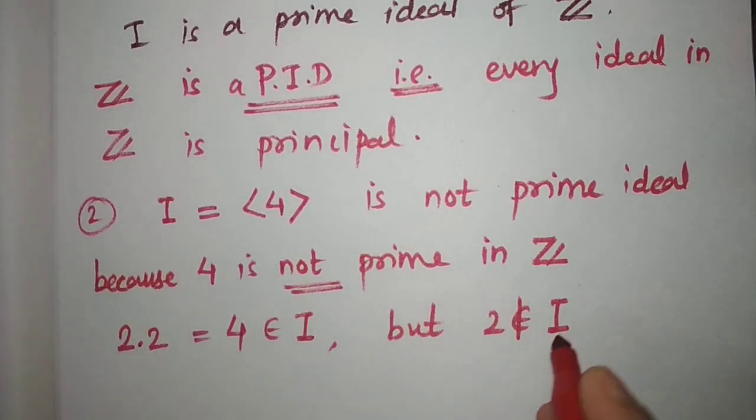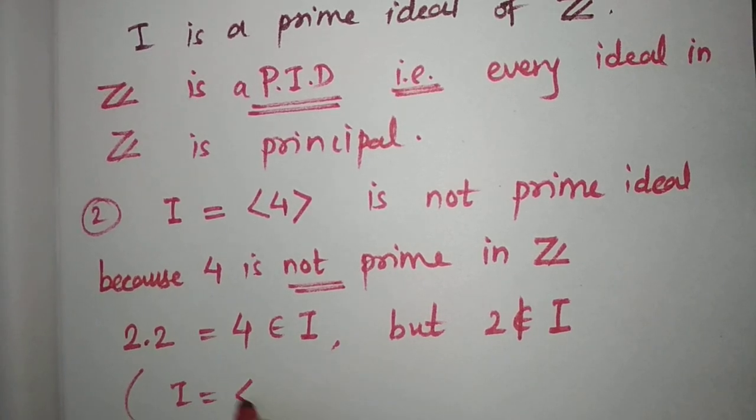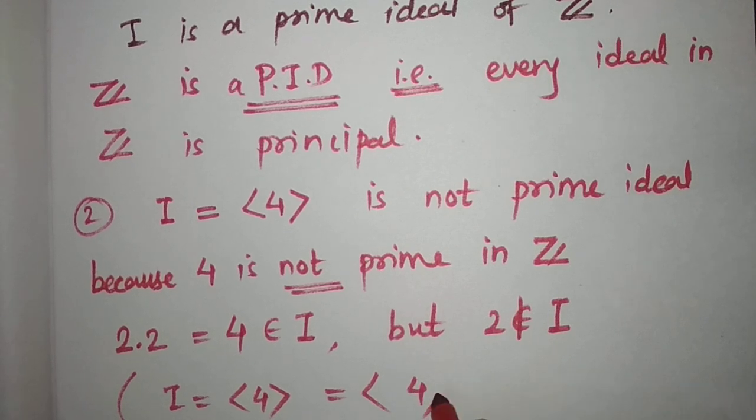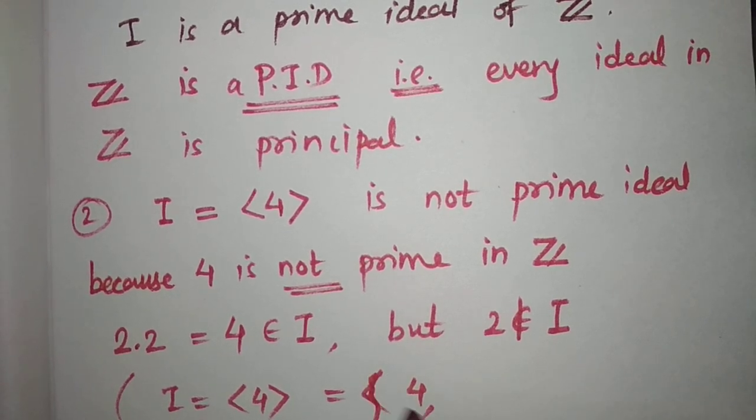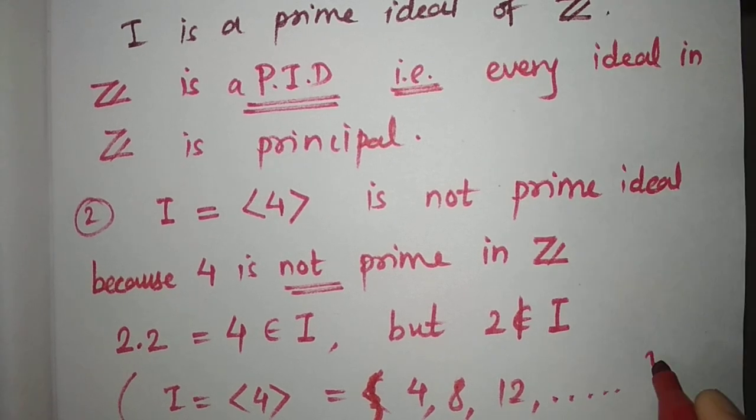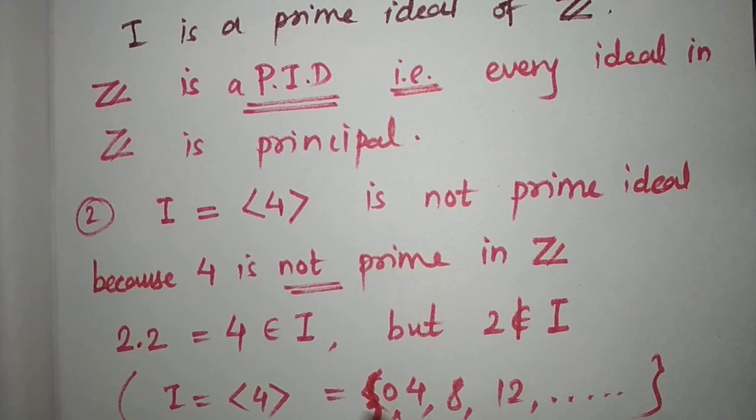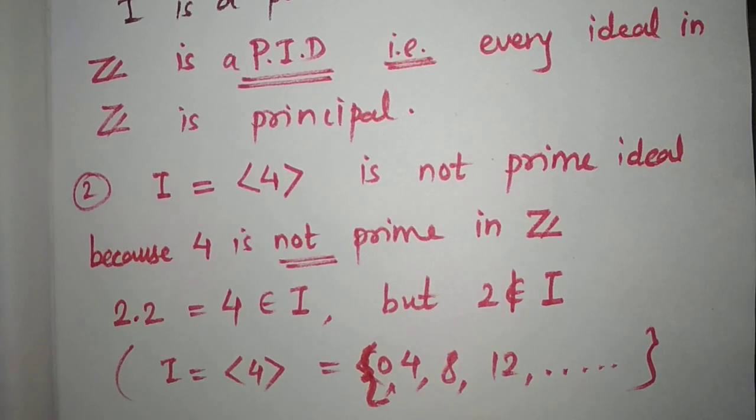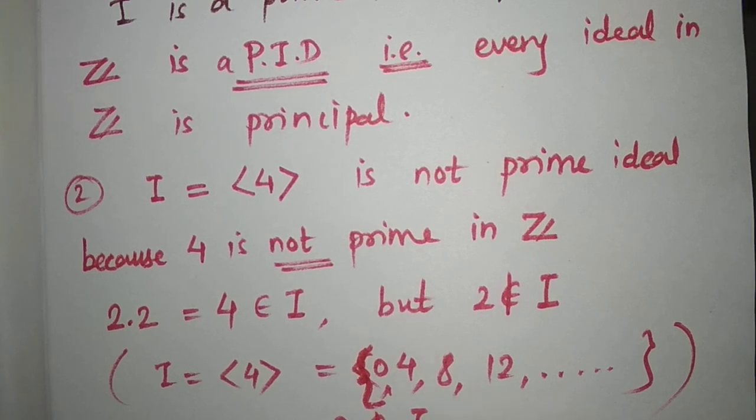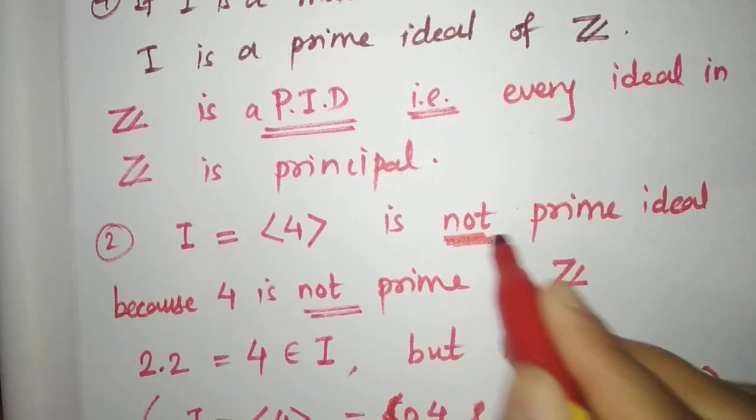But here, 2 does not belong to I because this ideal I is generated by 4. That is, this ideal is just 4, 8, 12, and so on - the multiples of 4, and also 0. So 2 is not in I, hence this is not a prime ideal.